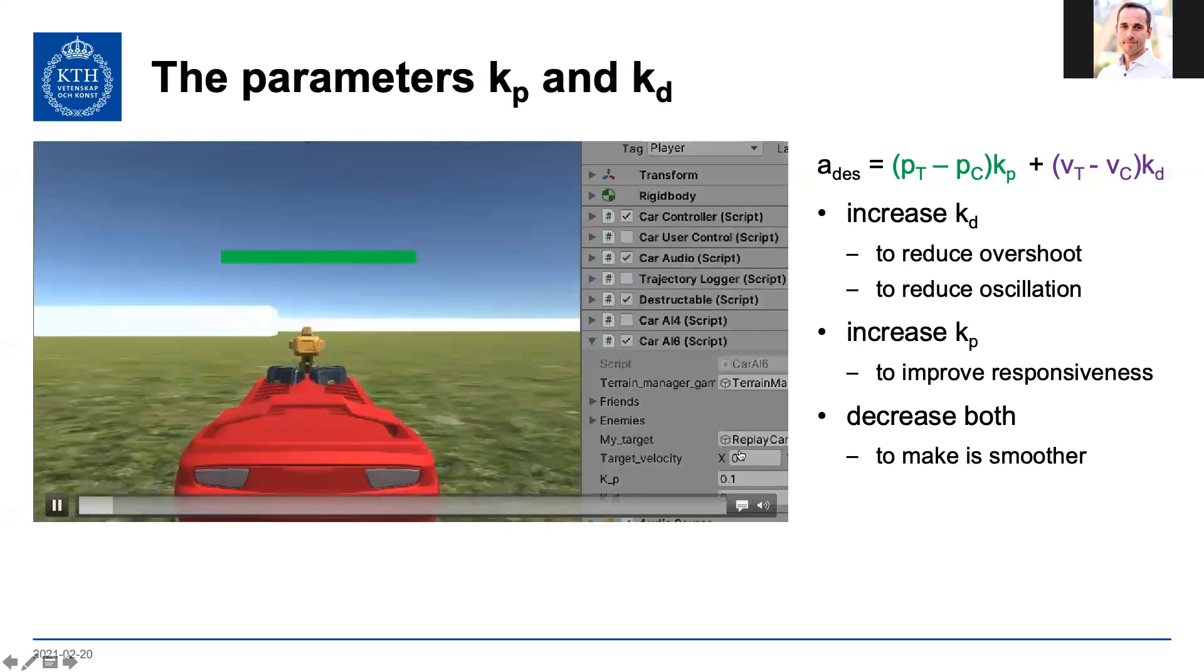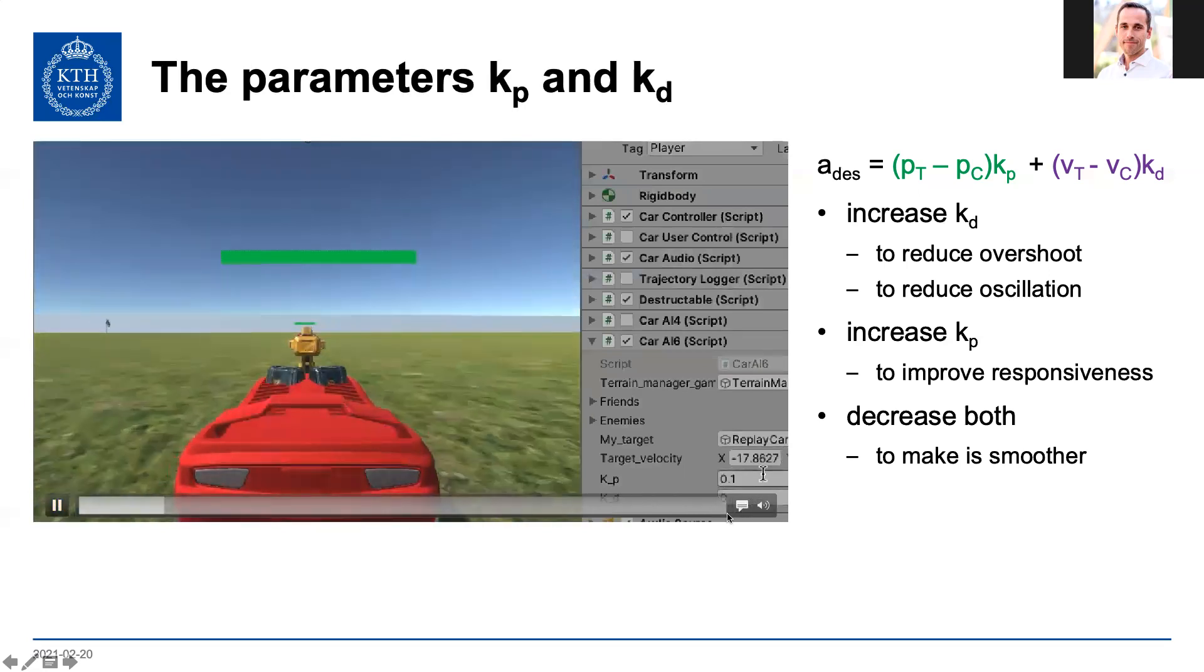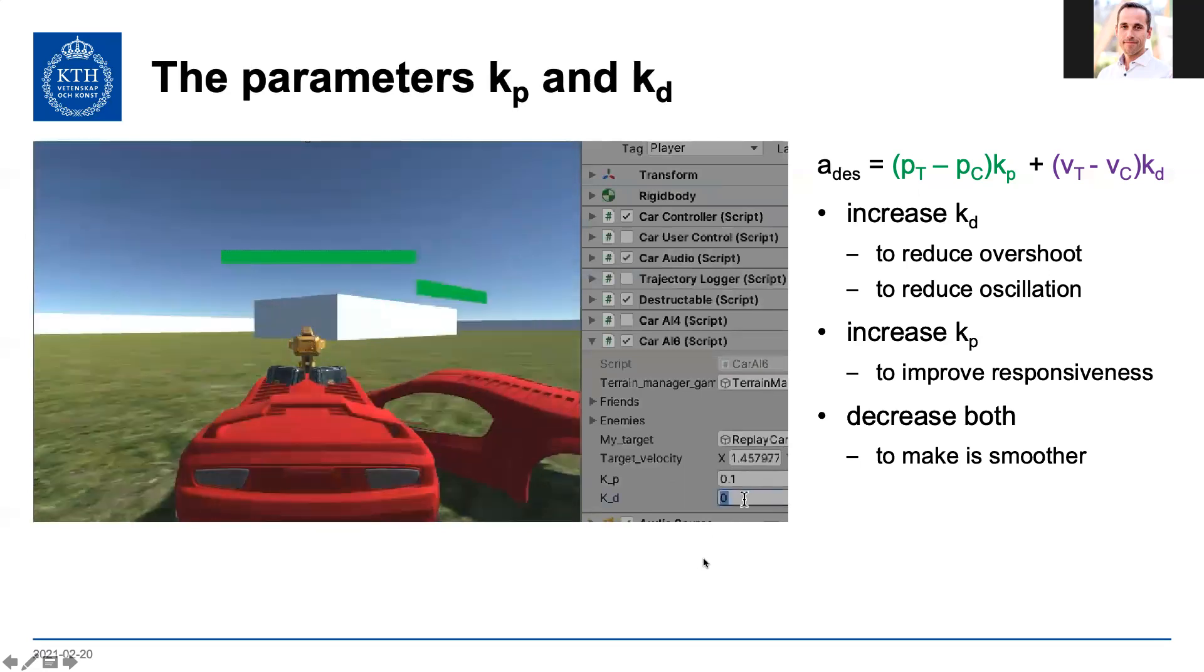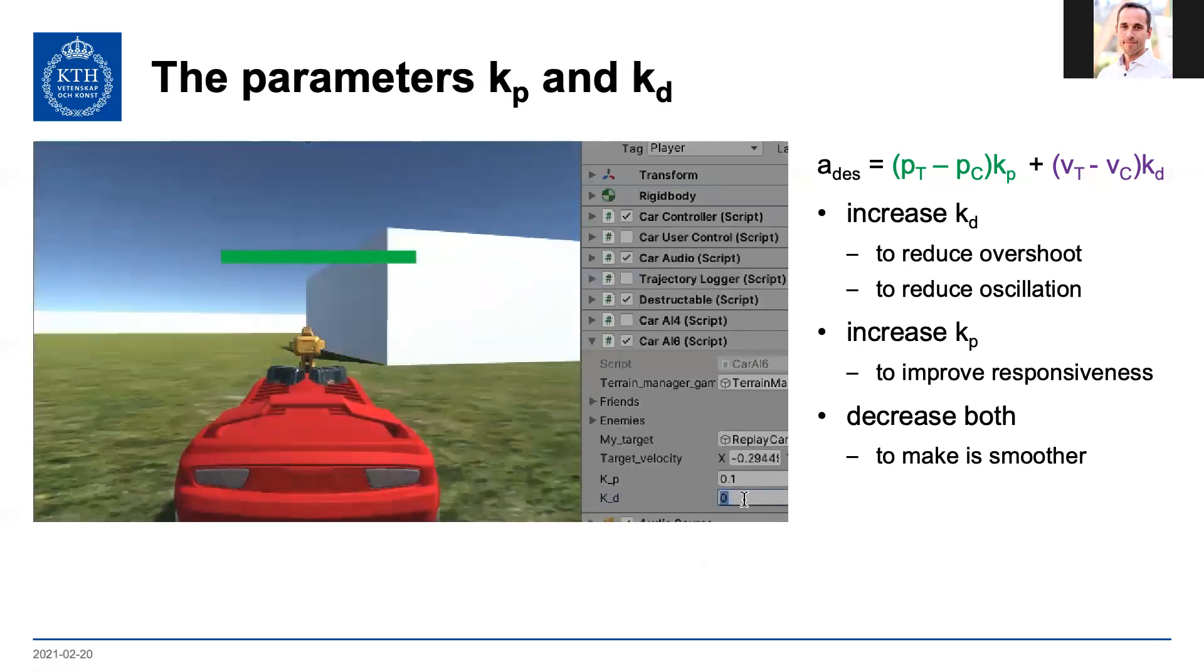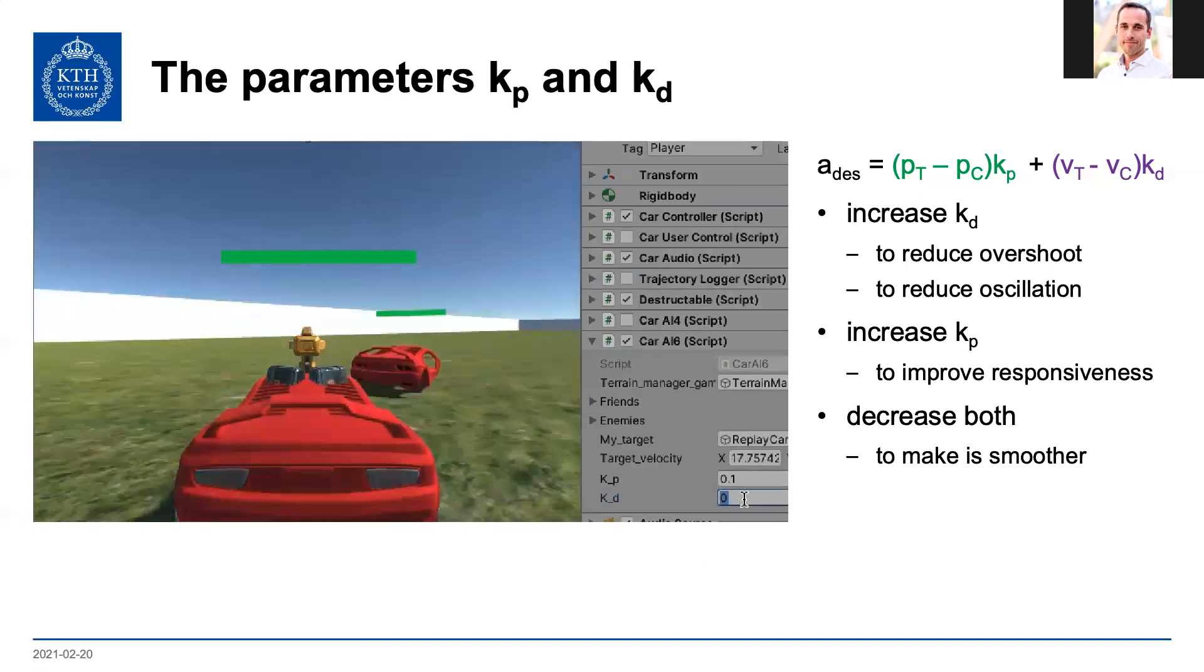So we're going to have the parameters down here, kp and kd, and we start out with zero kd and small kp. So as you can see, this is not very good tracking here. We're oscillating, we're overshooting.